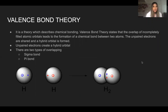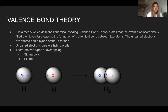Valence-Bond Theory describes chemical bonding specifically. It states that the overlap of incompletely filled atomic orbitals leads to the formation of a chemical bond between two atoms. The unpaired electrons are shared and a hybrid orbital is formed. Valence-Bond Theory is just describing the overlap of orbitals between two atoms, and it forms a covalent bond.